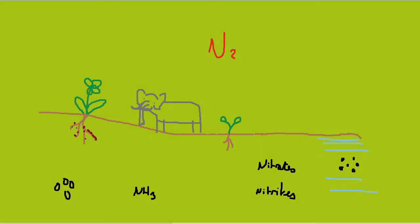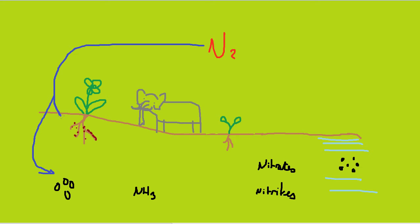Another nutrient that needs to be cycled around is nitrogen. The nitrogen cycle takes place in four stages. The first is nitrogen fixation — the conversion of atmospheric nitrogen into ammonium. This is done by either root nodules on leguminous plants or free-living bacteria. Inside the root nodules there are bacteria which turn nitrogen from the atmosphere into ammonium ions, NH3.